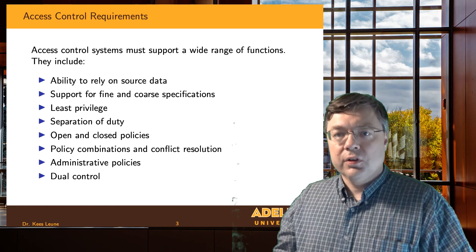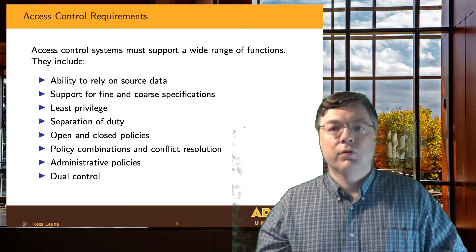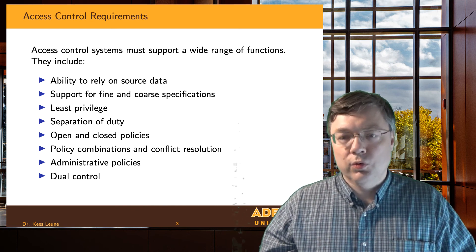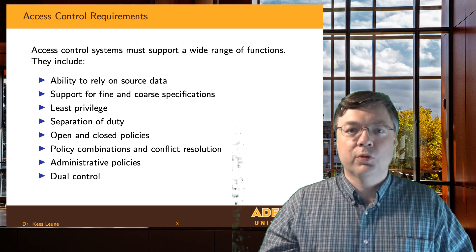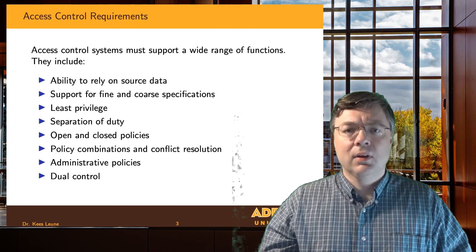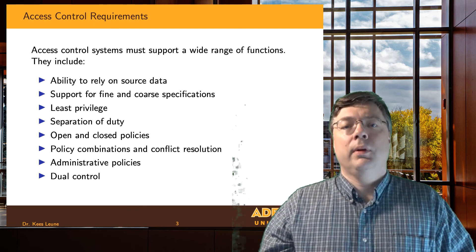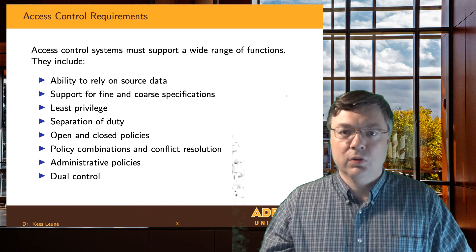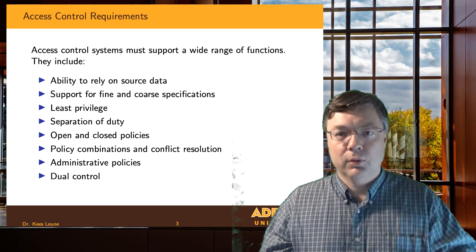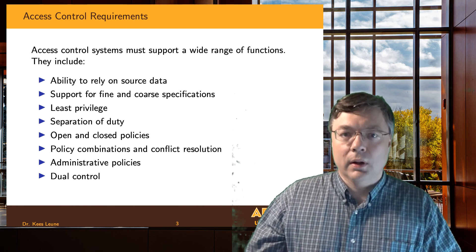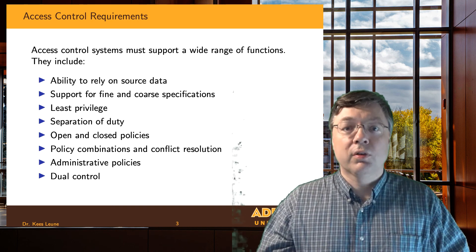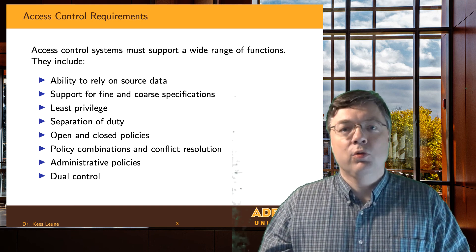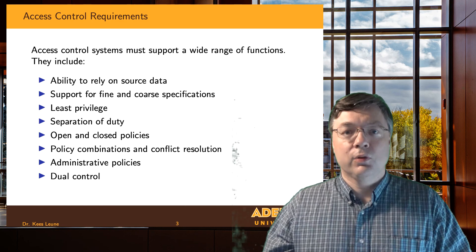For an access control system to be effective, it needs to meet a whole range of requirements. For example, we must be able to rely on source data. We must be able to support very fine specifications but also very coarse specifications. For instance, all Adelphi campus members are allowed to park in the underground garage — that's very broad. But I might also say only Professor Lerner can post grades for this particular section of CSC 280 — that's very narrowly defined. We need to be able to do both using the same system.